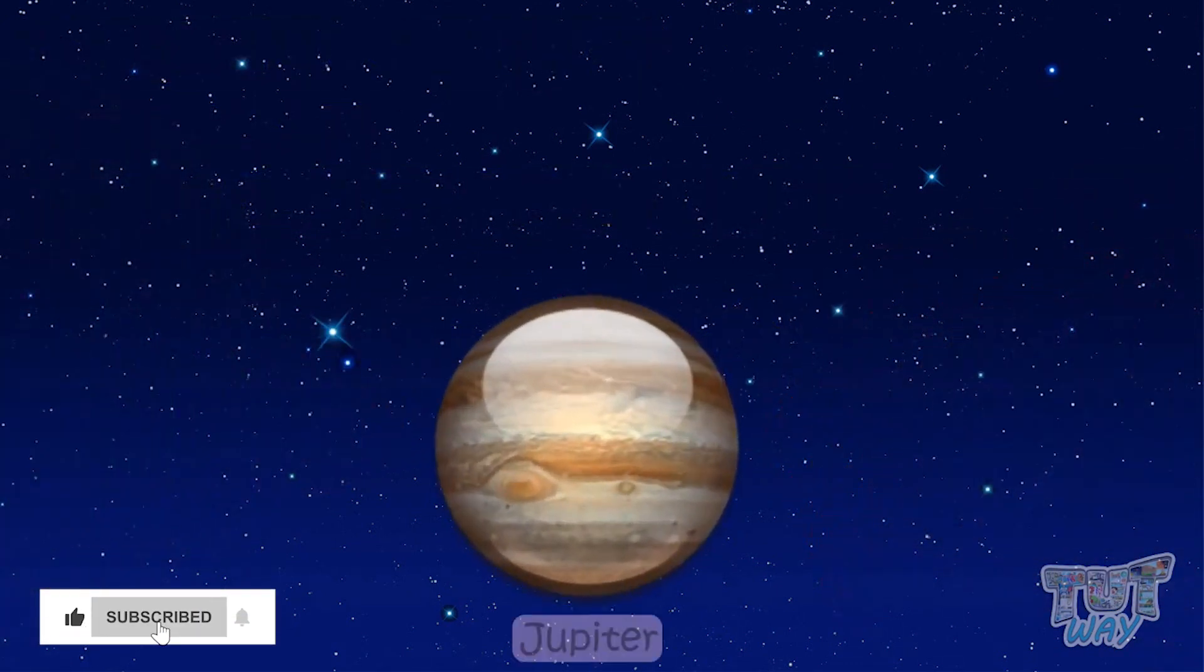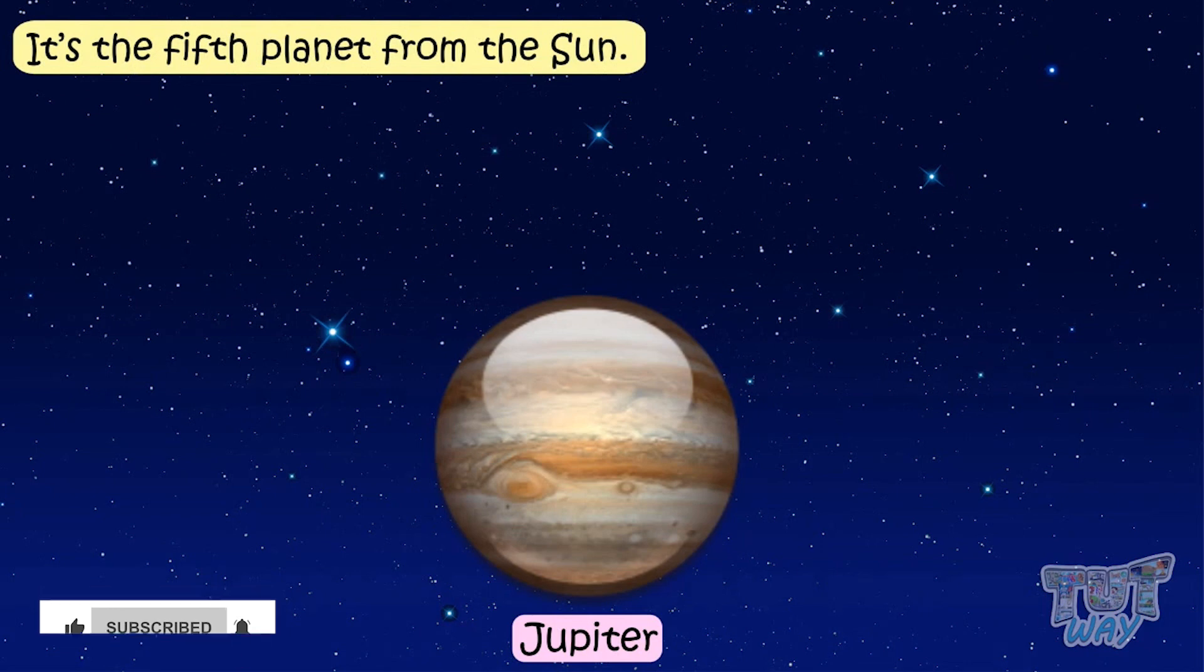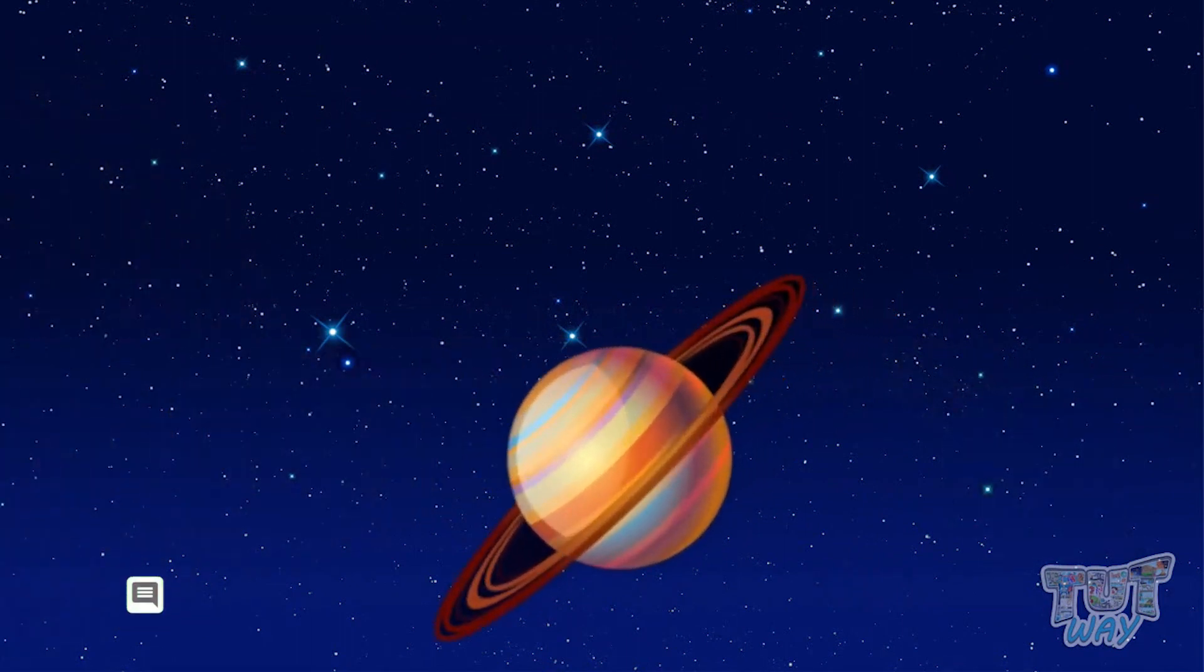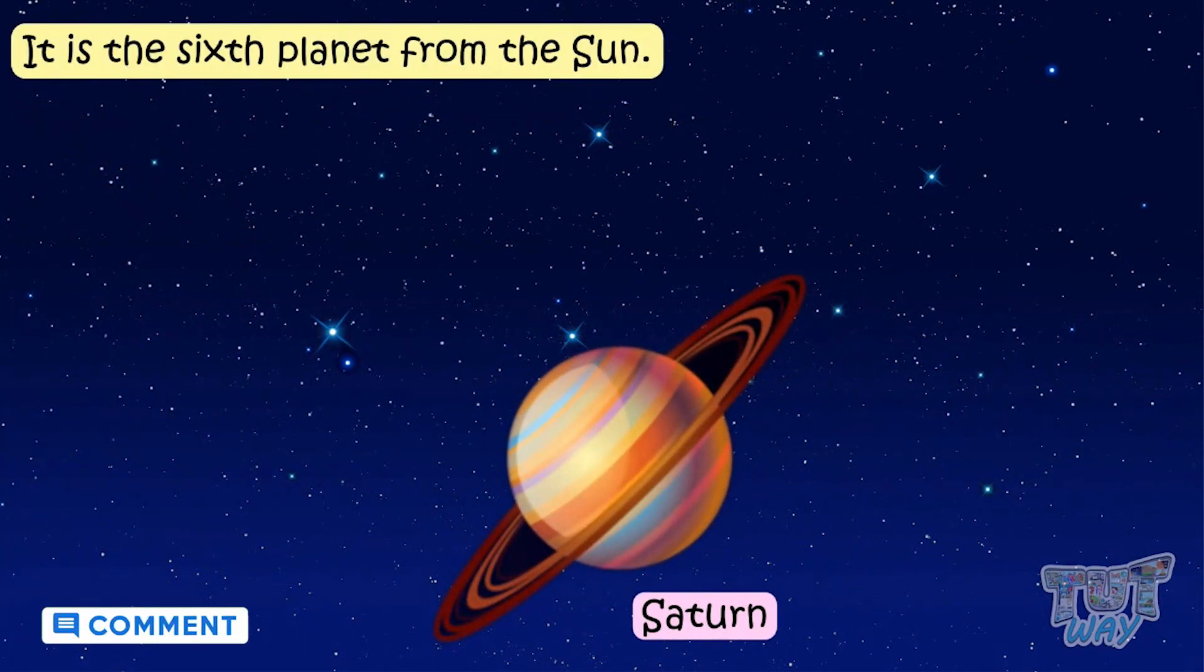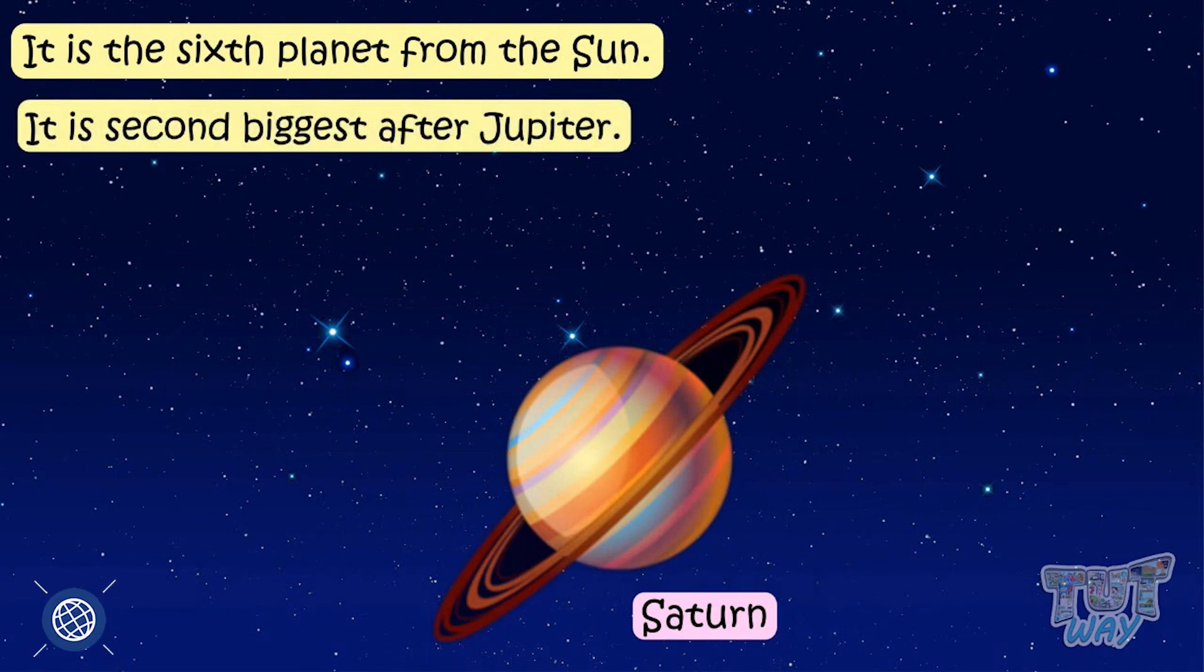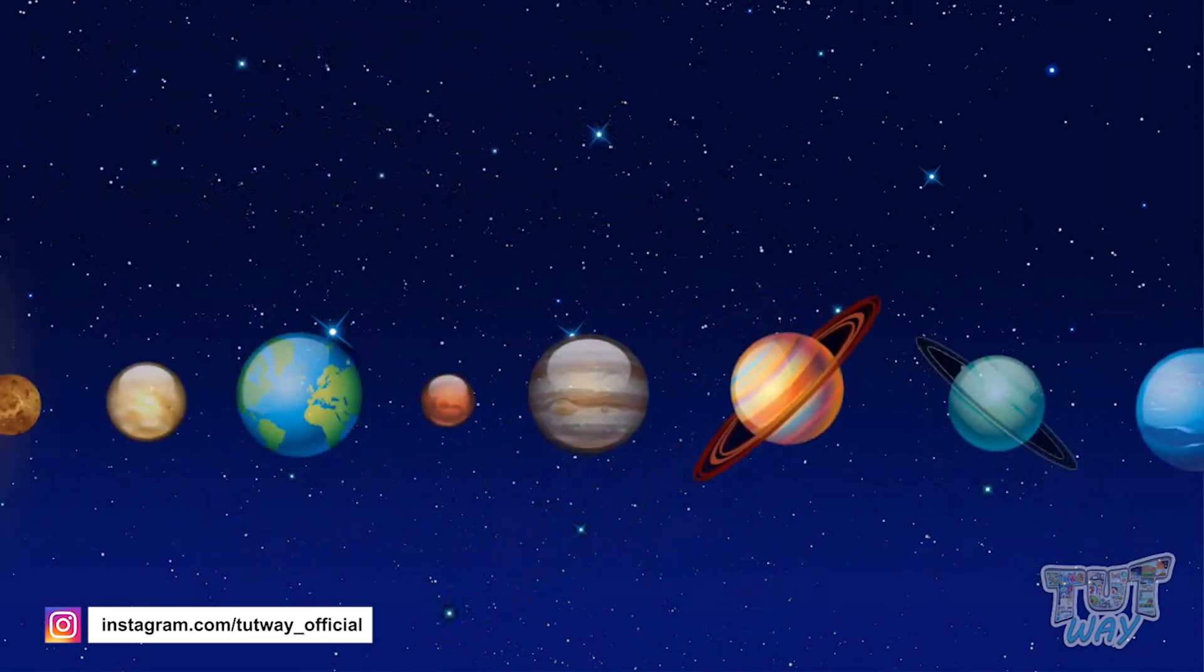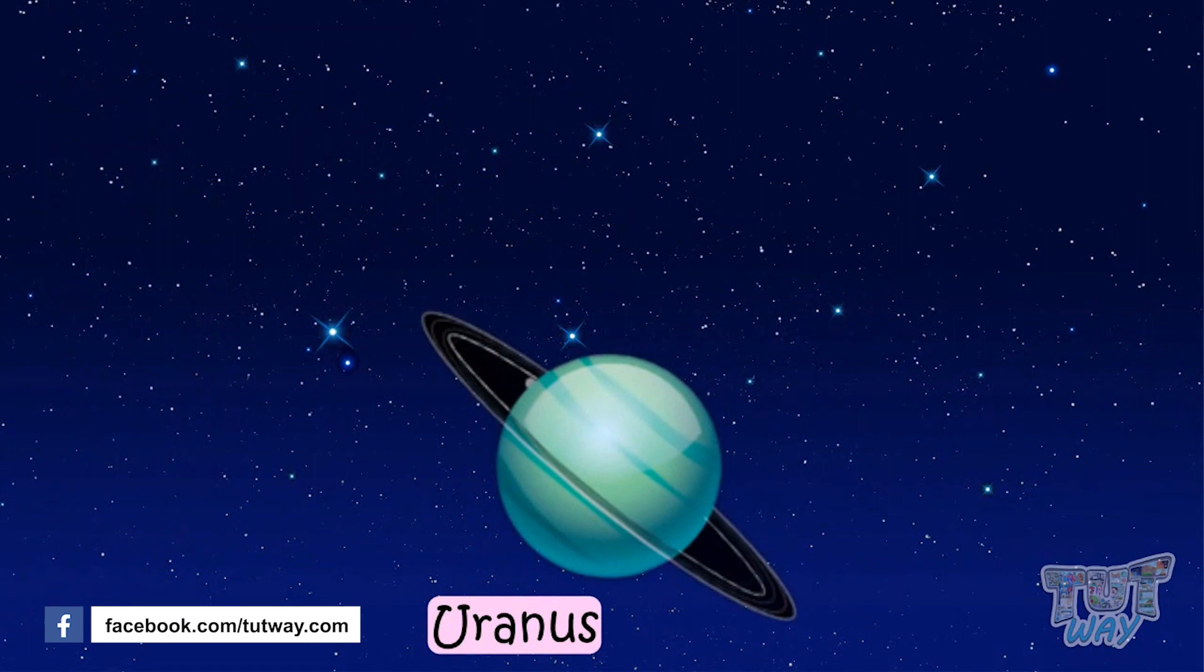Jupiter is the fifth planet. It is the largest planet in the solar system. Saturn is the sixth planet from the sun. It is second biggest after Jupiter. It has bright colored rings around it.